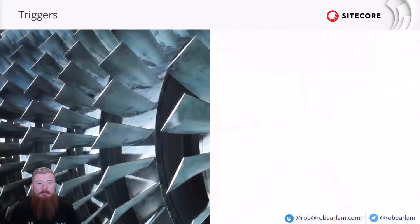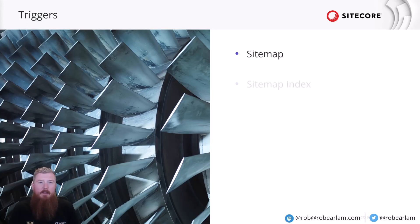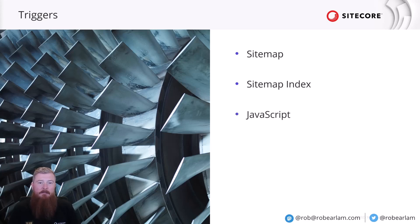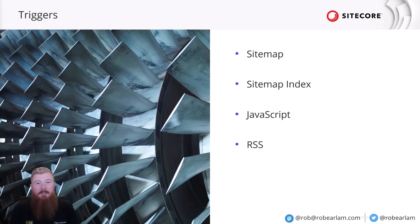Let's take a look at the triggers. There's a variety of triggers available, but what you can use depends on which connector you've selected — they're not all available for all connectors. The first are the sitemap and sitemap index triggers, designed to read sitemap or sitemap index documents; these are only available with the web crawler as they're web-specific. Next is the JavaScript trigger, where you can write JavaScript to build an array of URLs, useful when you need to add logic to the list. We also have an RSS trigger — simple to configure, you just point it to the RSS location and that source builds out a list of documents.